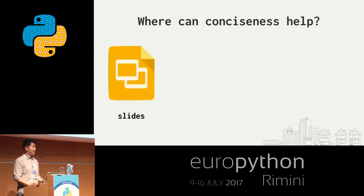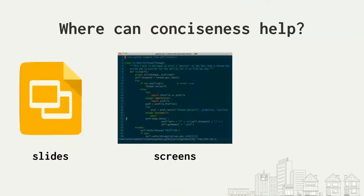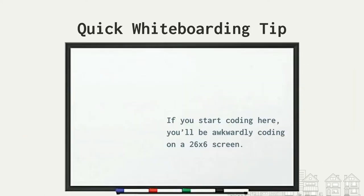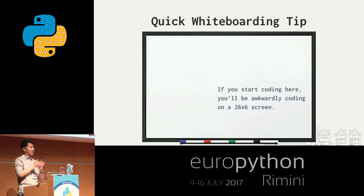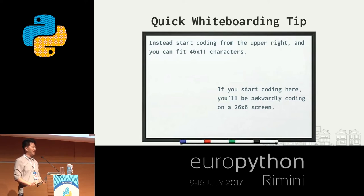Where can conciseness help? In presentations like this: the more code that fits on a slide, the easier it is to read, and with widescreen monitors you can fit a lot more. When actually coding, you can see a better picture of the code you're interacting with at any given time. And in interviews on a whiteboard, writing concise code fits more on the board. Quick whiteboarding tip: start coding at the upper left of the whiteboard — just like you'd start at the upper left on a screen — giving you a much larger effective canvas and avoiding the arrows and convolution of running into the edge.